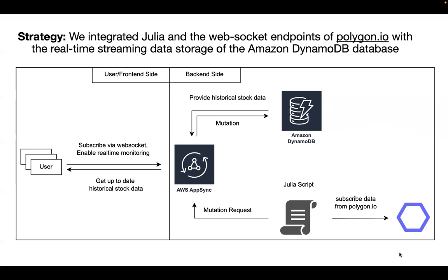We use PolygonIO as a data source provider because it can provide real-time data. We use a Julia script to extract the data from PolygonIO. Every time we receive new data, we will create a mutation request to AppSync. AppSync receives this request and then makes modifications on the database.